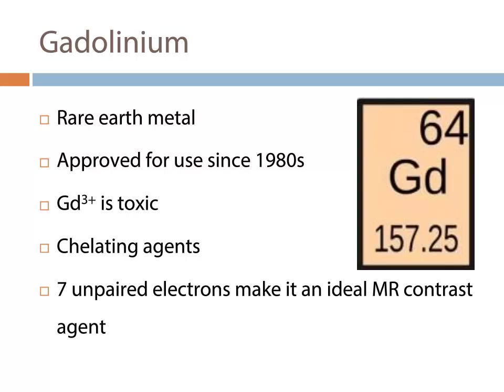The gadolinium 3-plus ion is actually toxic to humans, and in order to make it suitable for use as a contrast agent, it needs to be compounded with chelating agents in order to make it stable and safe. The seven unpaired electrons in gadolinium's outer shell make it particularly suitable for producing contrast on T1-weighted images by shortening the T1 relaxation time in the tissues where gadolinium distributes.